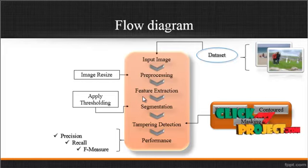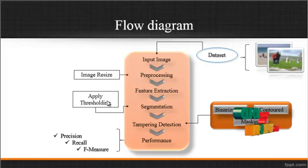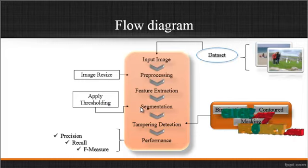After extracting these features, segmentation is performed using the thresholding method. In this segmentation step, features are extracted using SIFT, then those features are matched, and then merged regions are formed. After matching those regions, a labeled image is created. In this labeled image, the labeled regions are denoted as ones and the background regions are denoted as zeros. By using the labeled image, the merged regions are produced.